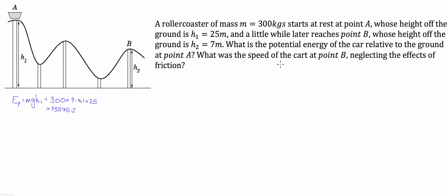Then it asks us: what was the speed of the cart at point B, neglecting the effects of friction? Basically, they're saying assuming none of this potential energy is lost to the environment as sound or heat. So the first thing we're going to do is calculate the potential energy at B, which again is equal to mg times H2.